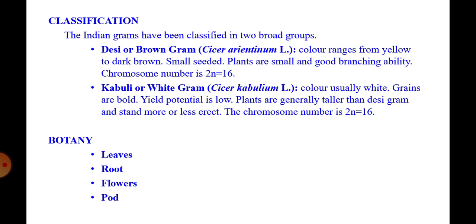Deshi gram plants are small with good branching ability, having chromosome number 2N equal to 16. In the case of Kabuli or White Gram, the color of seeds is usually white, grains are bold and attractive, but yield potential is poor compared to Deshi or Brown Gram. However, plants are generally taller than Deshi Gram and have the same chromosome number 2N equal to 16.